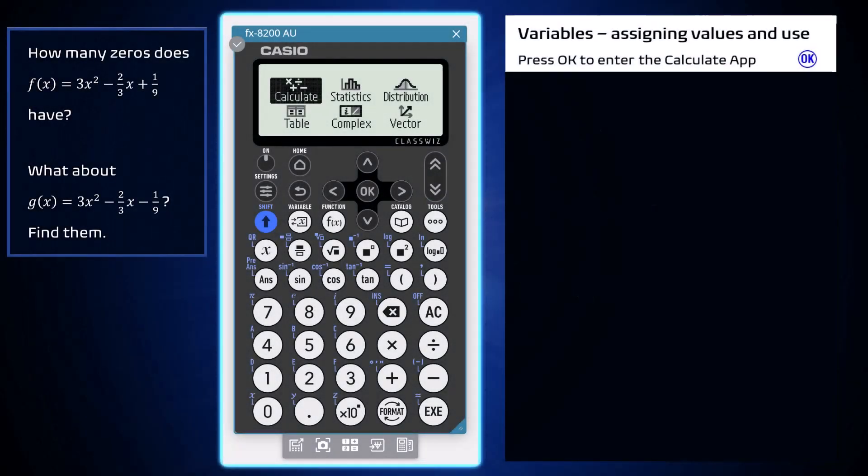For some mathematical processes, it is useful to assign values to variables and then use them to evaluate expressions like the discriminant of this quadratic function.